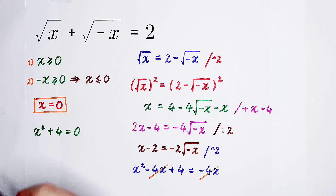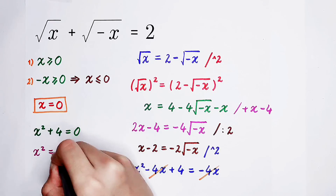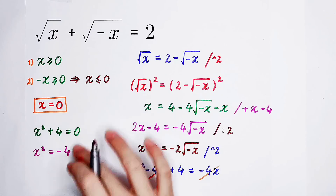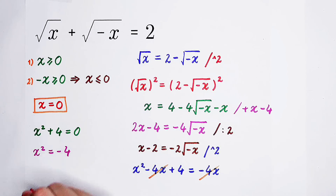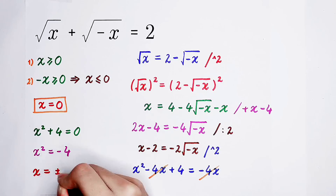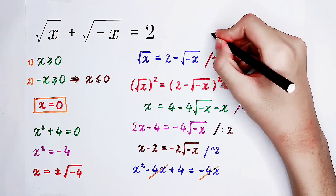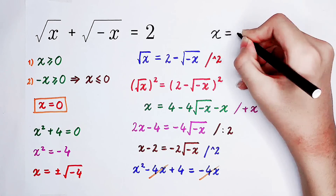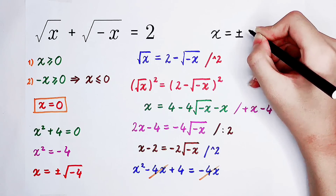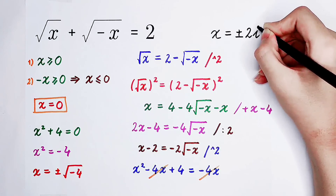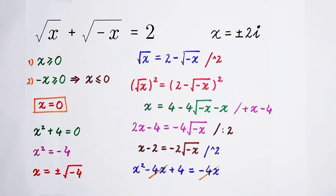Our next step is x squared equals negative 4, by subtracting 4 from both sides. And then our last step: x is equal to positive or negative square root of negative 4. We know that the square root of negative 4 is an imaginary number — it equals 2 times i, where i is the imaginary unit and i equals the square root of negative 1. So the answer is x equals positive or negative 2i.